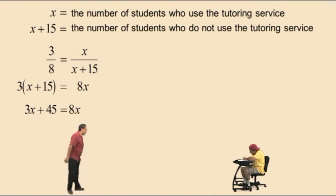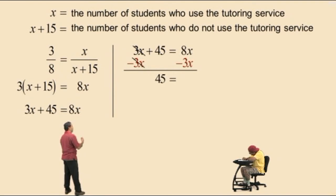Let's put our work up there. Now, to solve for x, we'll subtract 3x from both sides giving us 45 equals 5x. Now, to solve for x, we'll divide both sides by 5 and that gives us 9 is equal to x.